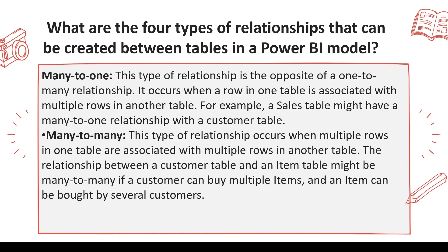Next is many-to-one. Here the sales table is the first table having multiple values of item ID, and the item table is the second table having only one value for each item ID. So this join from sales to item is many-to-one.